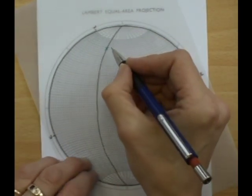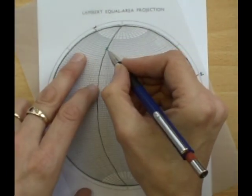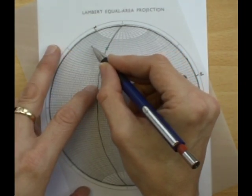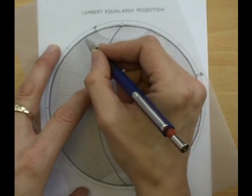And then we move the flute cast along the small circle by the same number of degrees: 10, 20, 30, 40, 50, 60.